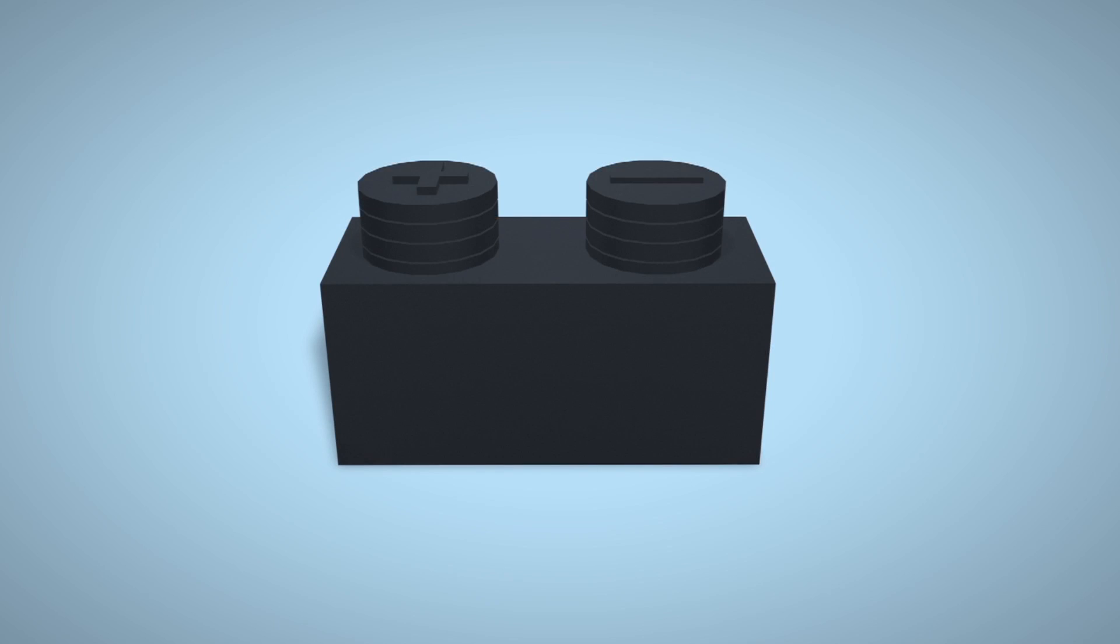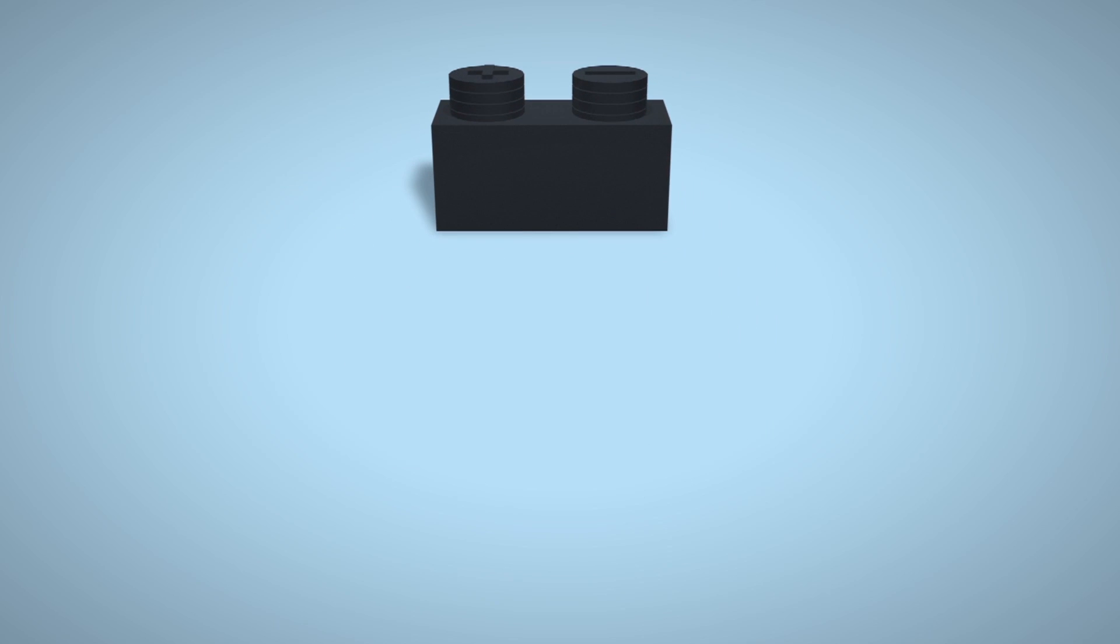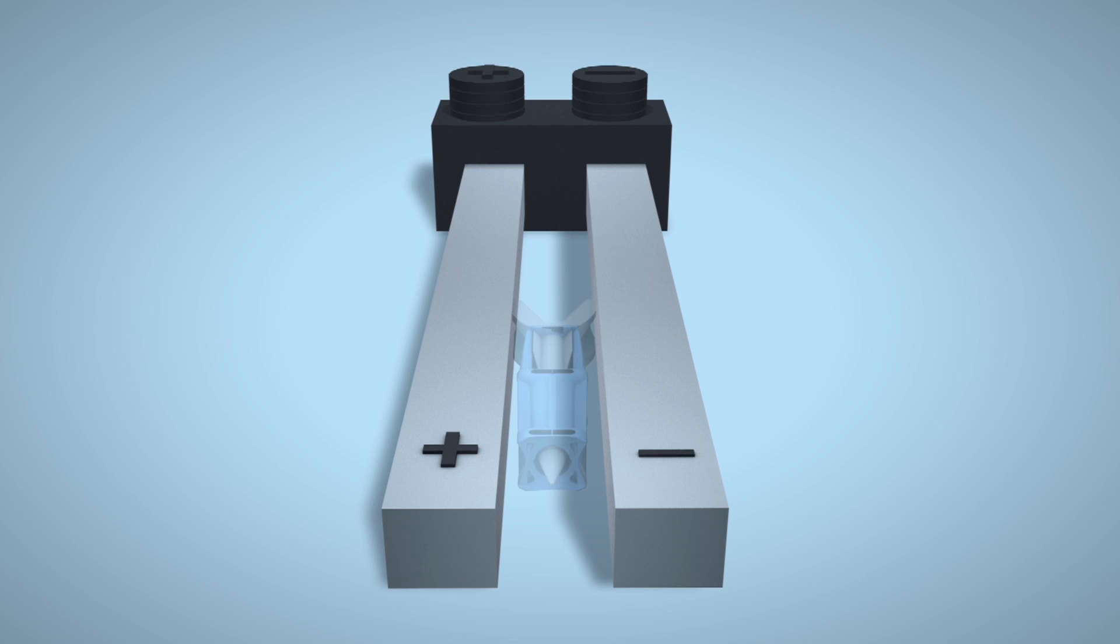A railgun is comprised of three parts: a power source, a pair of parallel rails, and a moving armature.